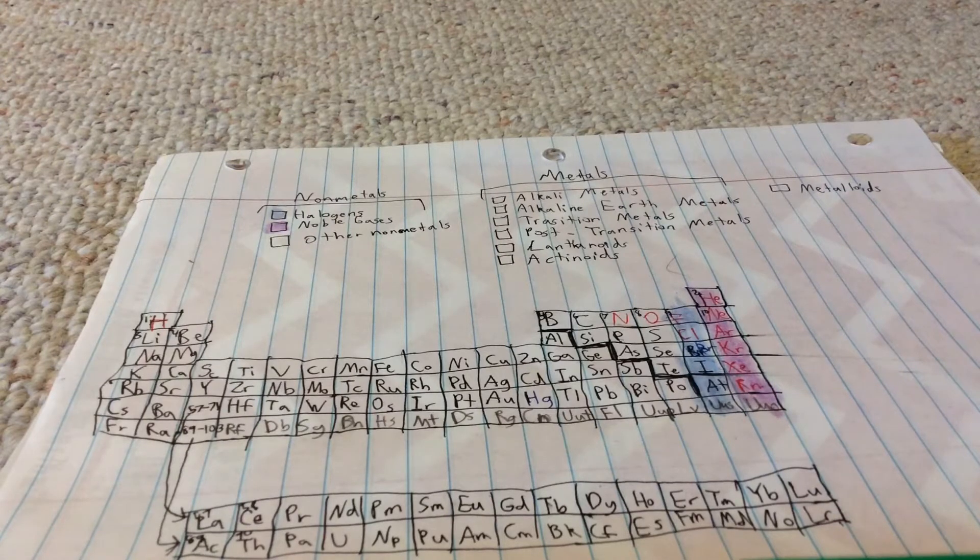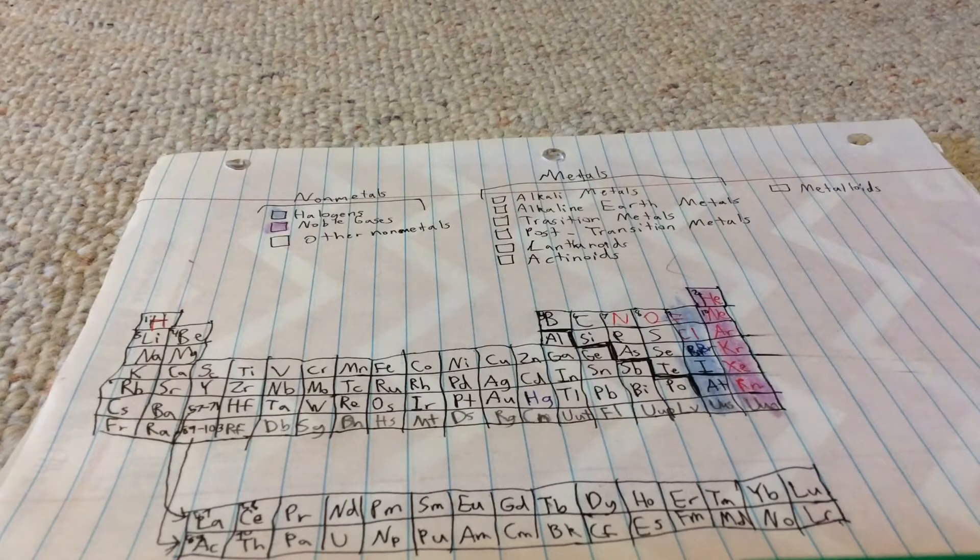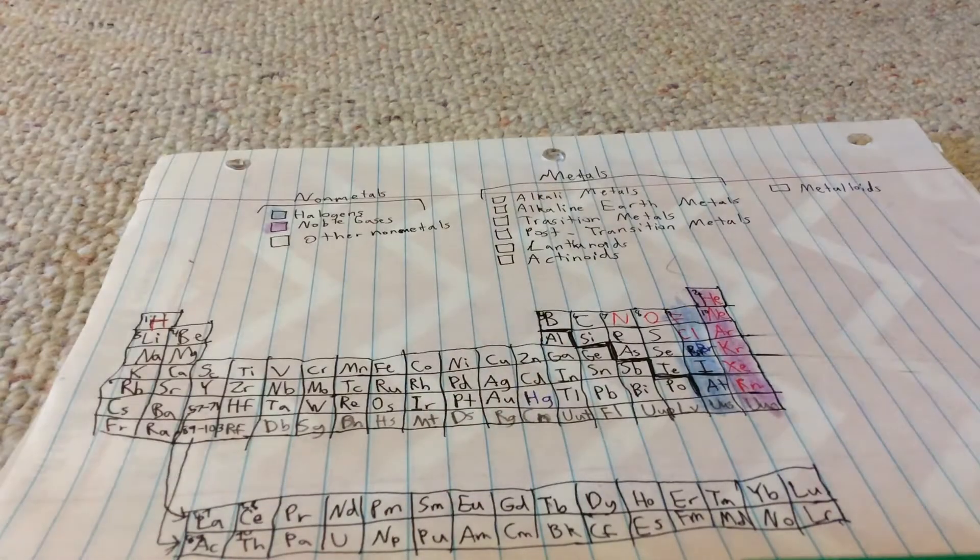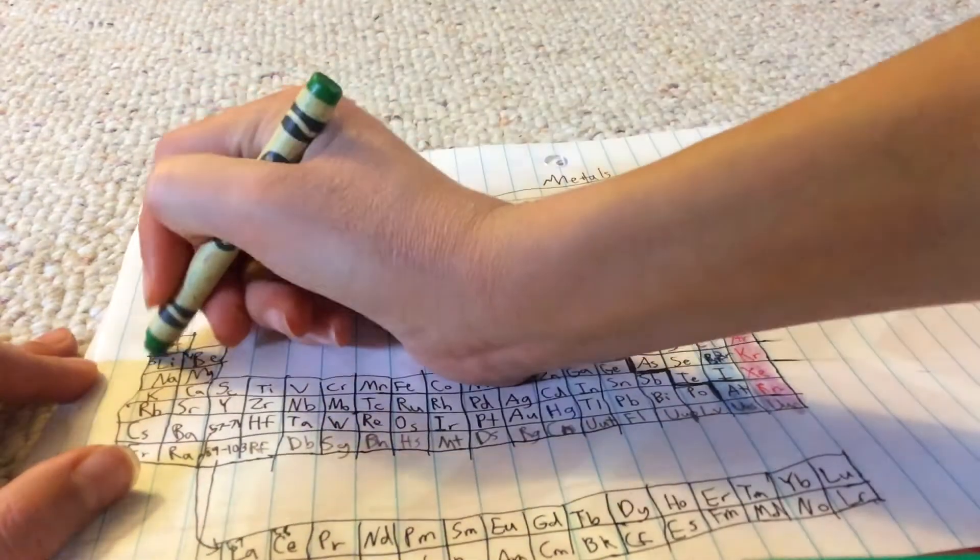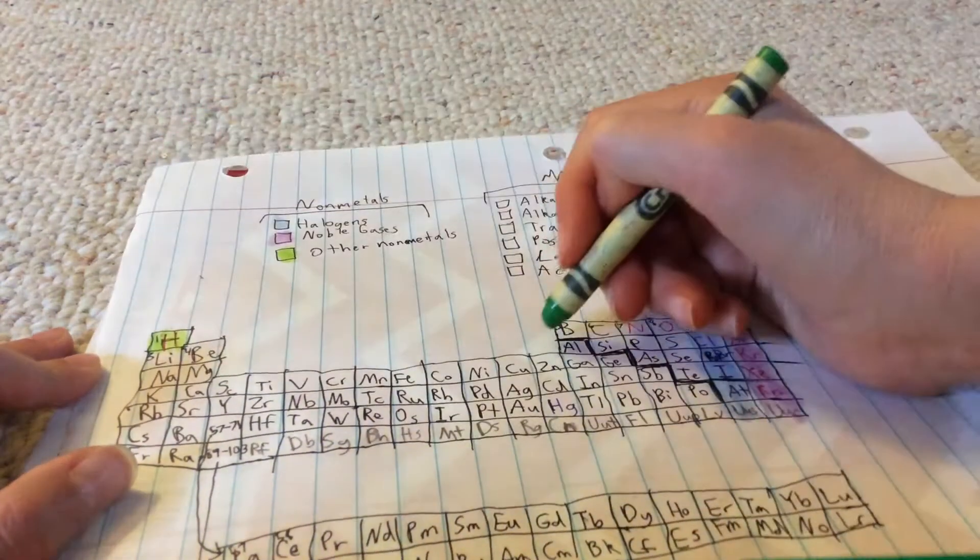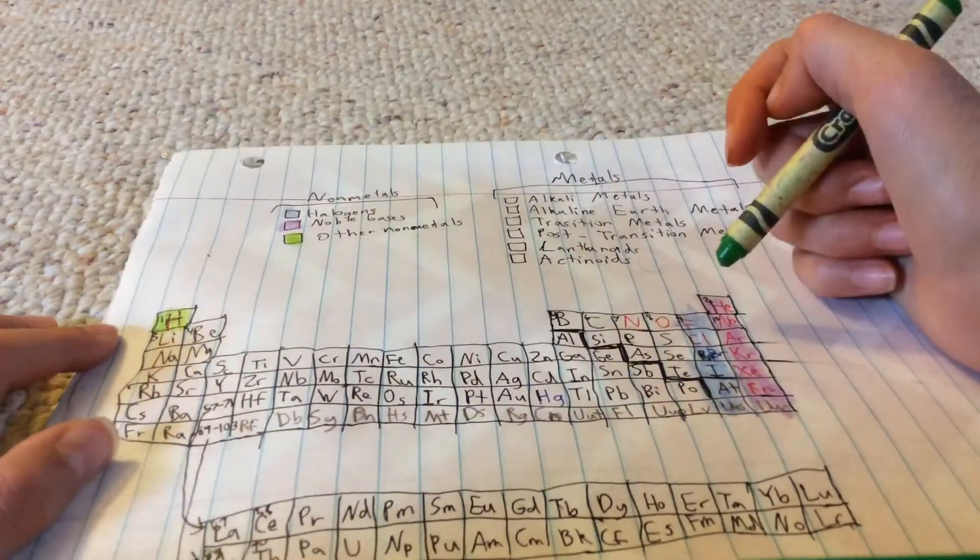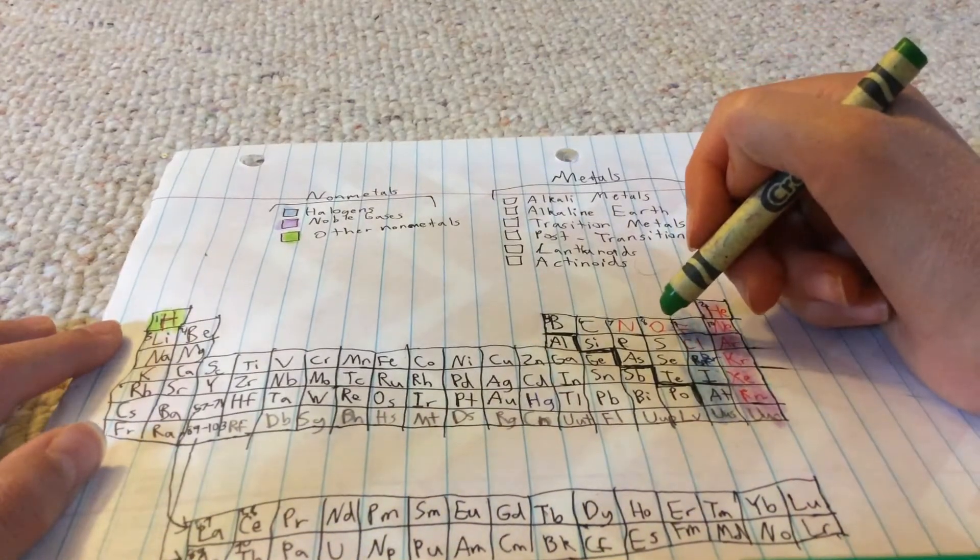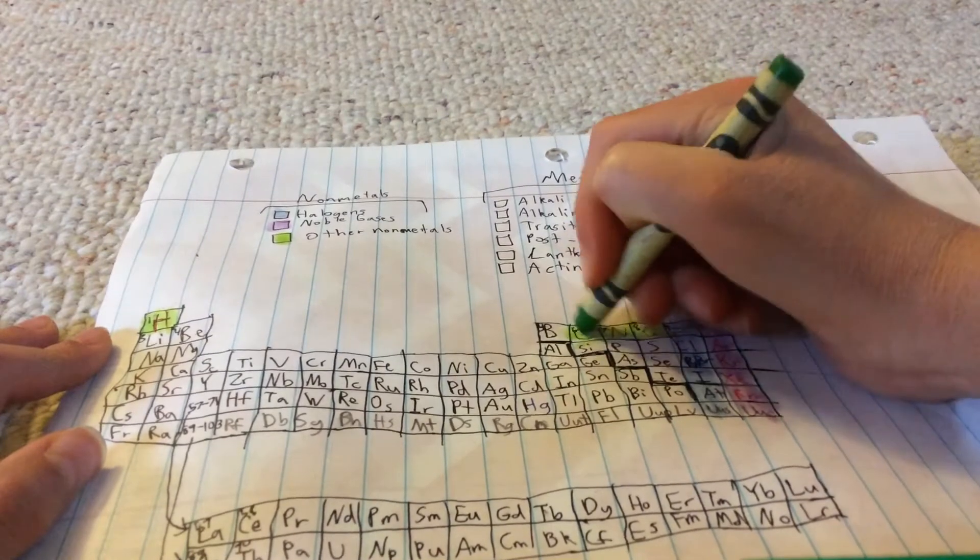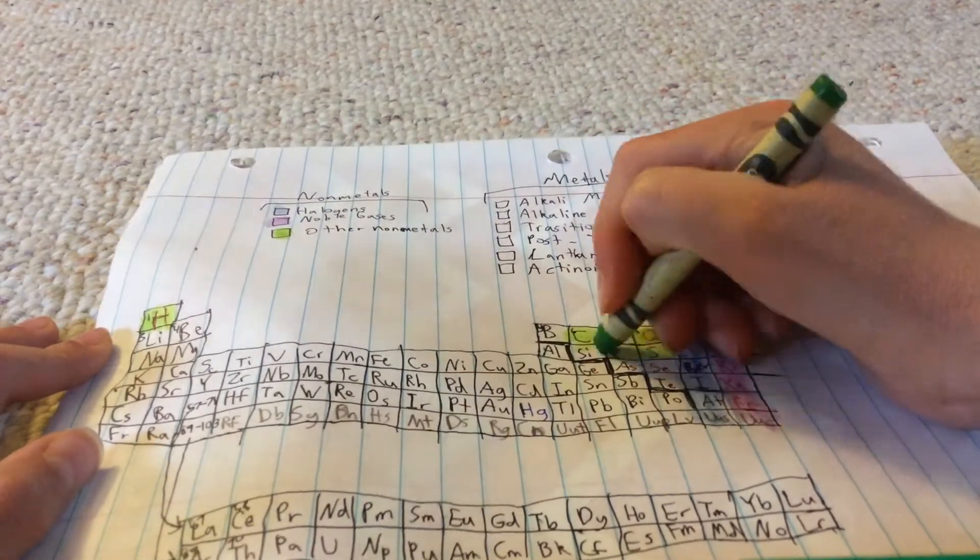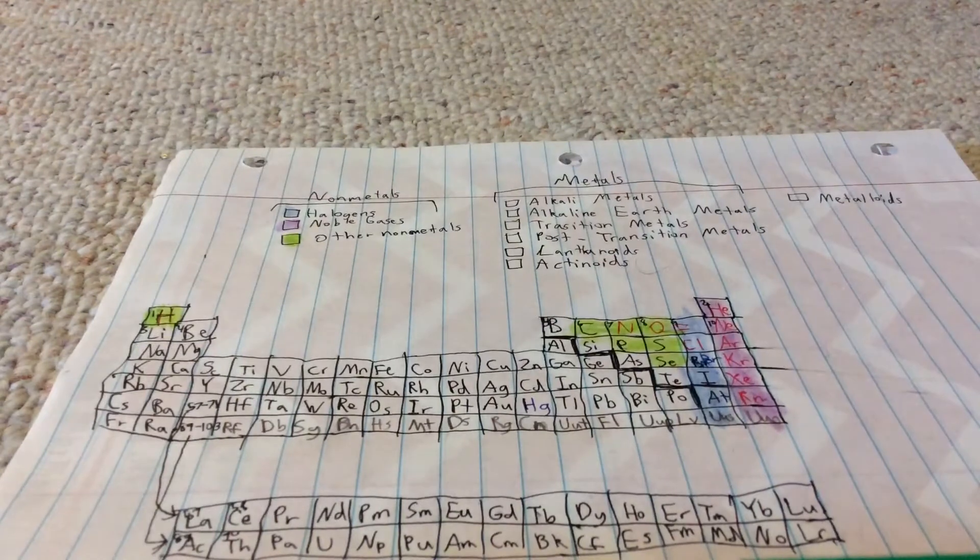Other non-metals I'm gonna make yellow-green. As you can see, hydrogen is on the other side of the zigzag, is on the other side of the zigzag line, but it should be separated but I didn't do that. Just to keep in mind, it's gonna be carbon, nitrogen, oxygen, phosphorus, sulfur, and selenium. Yes, this zigzag line is used to divide the metals and non-metals.